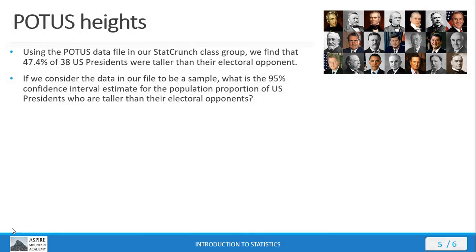Let's look at another problem before we wrap up our mini-lecture today. Using the POTUS data file in our StatCrunch group, we find that 47.4% of 38 U.S. presidents were taller than their electoral opponent. So if the data in our file is a sample — and that's not unreasonable since our data file does not include every U.S. president that has served in office — what is the 95% confidence interval estimate for the population proportion of presidents who are taller than their electoral opponents?